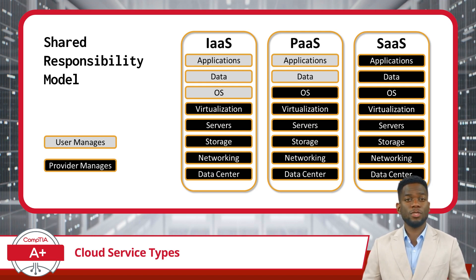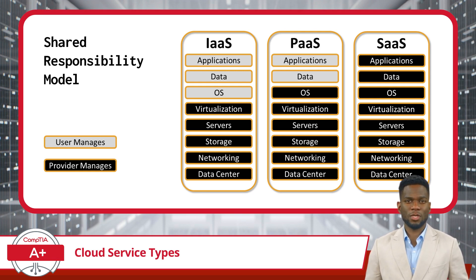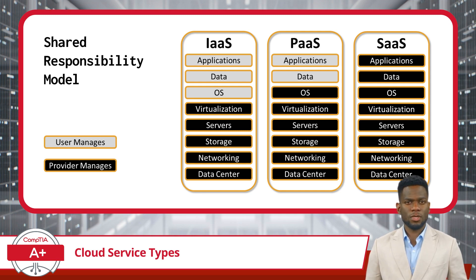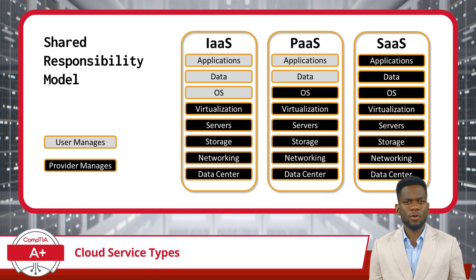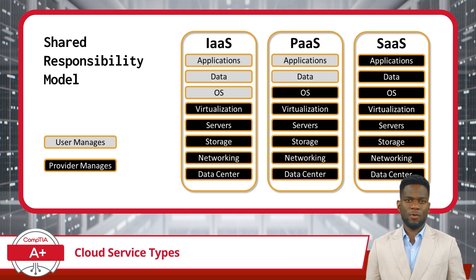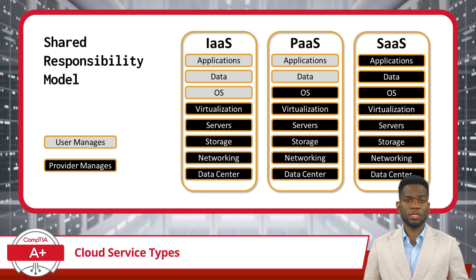For infrastructure as a service, users bear more responsibility for managing the operating system, applications, and data. The cloud provider handles infrastructure-related tasks such as data center management, networking, storage, server maintenance, and virtualization management. In platform as a service, the cloud provider takes on more responsibility for managing the underlying infrastructure, including the operating system. Users are primarily responsible for developing, deploying, and managing their applications and data.